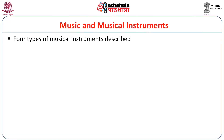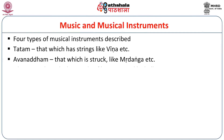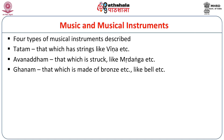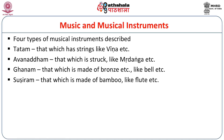In terms of musical instruments, four types are described. One is Tatam — a stringed instrument like Veena. Another is Avanadham — which is struck, like a Mrudangam. The third is Ghanam — made of bronze, like a bell, so that it makes a ringing sound. The final one is Sushiram — like a flute, Venu, wherein air is blown through holes at set distances. We see that in ancient India, music was in a very developed state and the four main kinds of musical instruments were present.